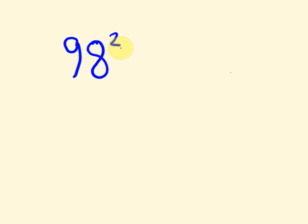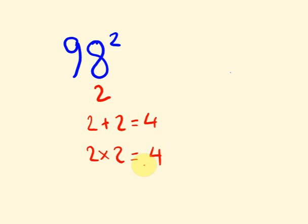What about if the number falls below 100? What happens if it's numbers 90 up to 100? Let's have a look at the number 98 squared. This is actually 2 below 100. So first off, 2 plus 2 is 4. With 100, if we take away the 4 to start off with, we get 96. And then we get 4 on the end from 2 times 2, giving us 9604.